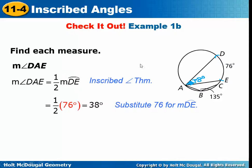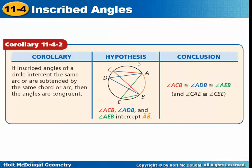Remember, in order for this theorem to work, it has to be an inscribed angle, and an inscribed angle has to have its vertex on the circle. In the next lessons, we'll look at other kinds of angles that are not on the circle. There's also a corollary: if inscribed angles of a circle intercept the same arc or are subtended by the same arc, then those angles are congruent.